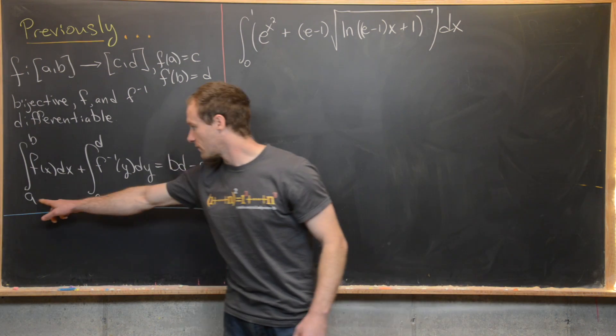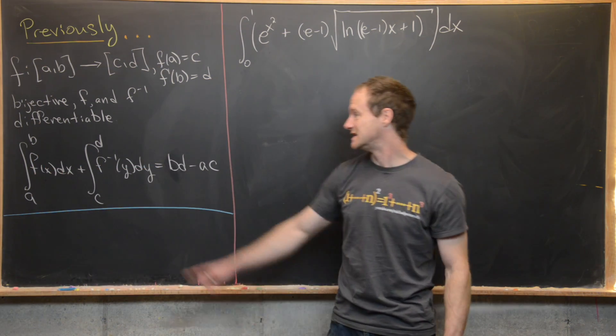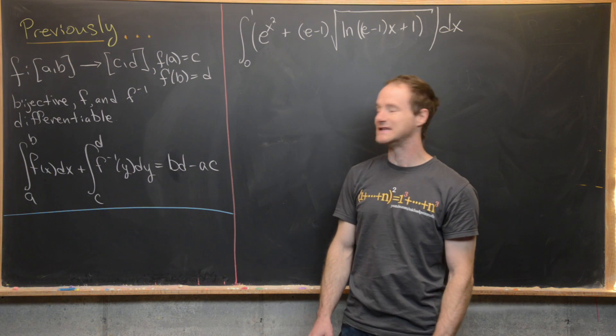Then we have the integral from a to b of f plus the integral from c to d of f inverse is equal to bd minus ac.